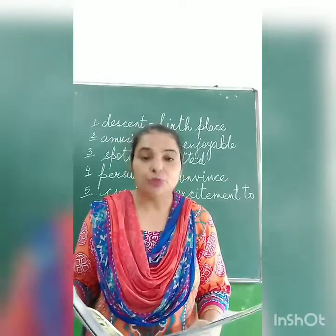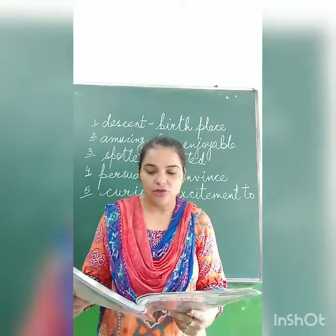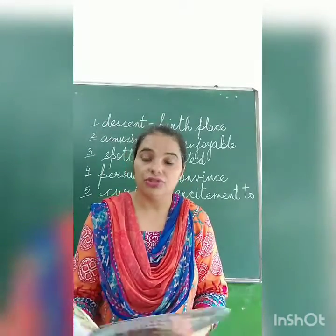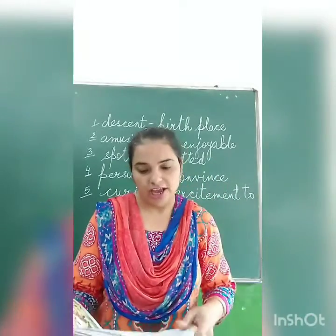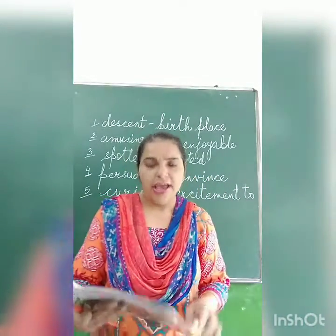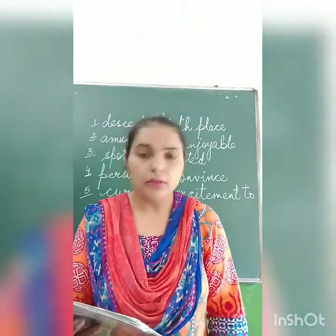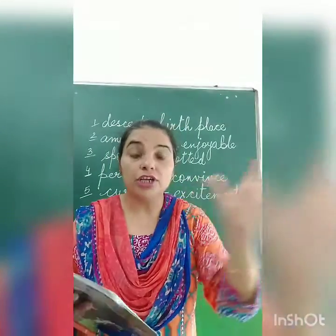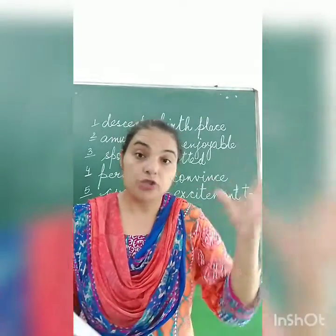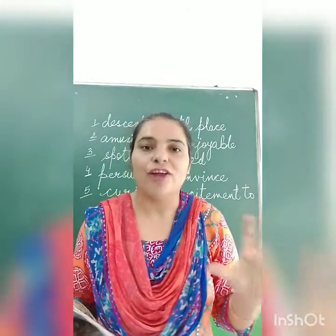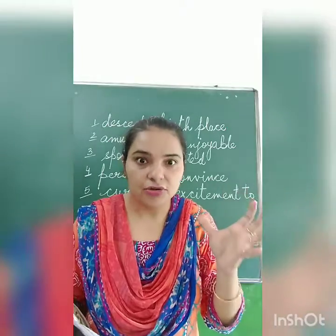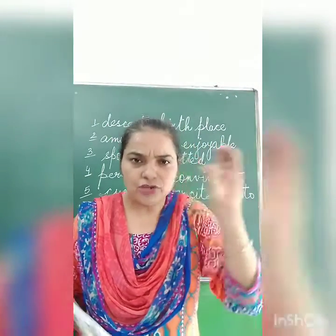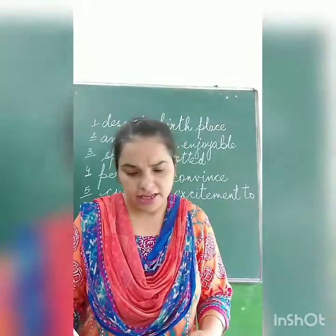Spotted owlets are small birds, and they have none of the frightening appearance of large owls. Spotted owlets — those with dots — are small birds. They do not look like large owls at all. Large owls are very frightening with their big eyes and all that. But small owlets do not look frightening like them.